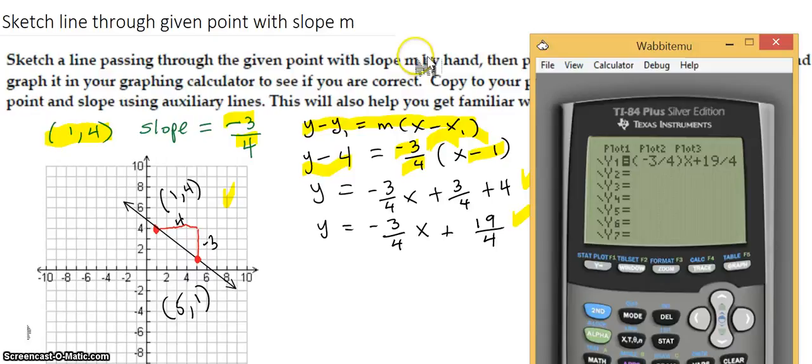Okay, I hit the y equals key right here. And then I got this screen. So I put in negative 3 fourths with the parentheses. Now that's the little negative, not the subtraction sign. The little negative that's at the bottom of the keyboard of the calculator, times x plus 19 divided by 4. Okay, so there it is. And now I'm going to graph it. So I press this graph button here.